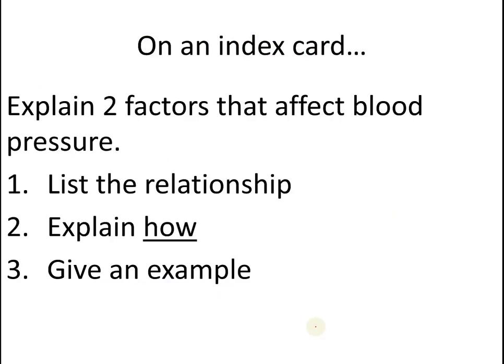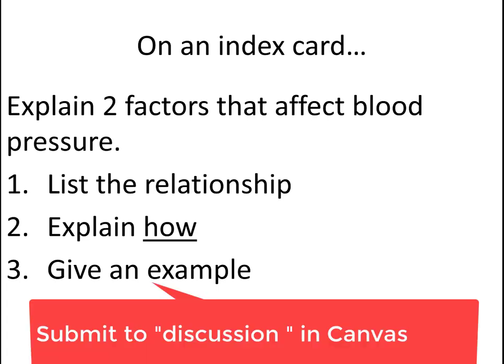For your assignment, explain two factors that affect blood pressure: list the relationship first — for example, an increase in total blood vessel length increases blood pressure — then explain how it does that, and provide an example. Submit your answer on Canvas as practice for writing an essay question.